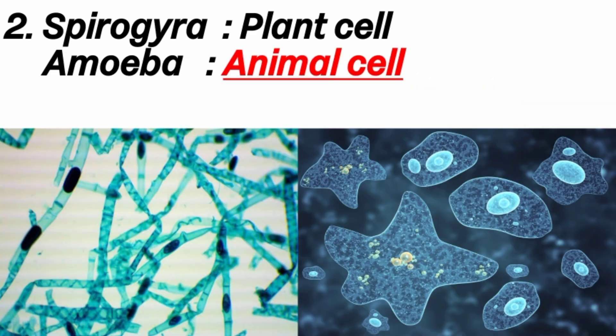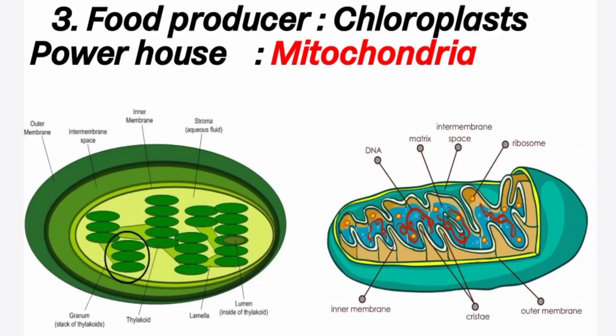Second question: spirogyra is a plant cell; amoeba is an animal cell. Spirogyra is a multicellular plant cell; amoeba is a unicellular animal cell. Third question: food producers are chloroplasts, because chloroplasts are only found in plants and are used to produce food by photosynthesis. Similarly, power house is dash. Answer is mitochondria. Mitochondria produce and supply most of the energy for the cell, so it is called the powerhouse of the cell.